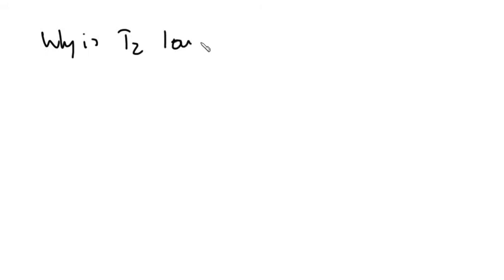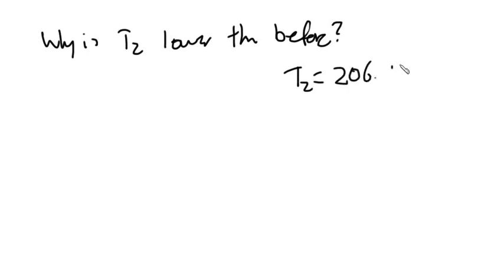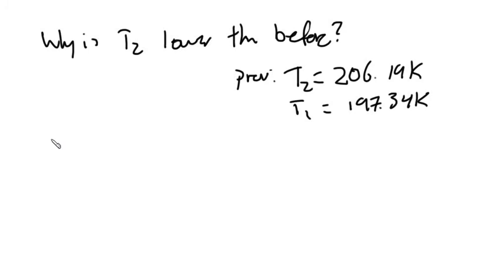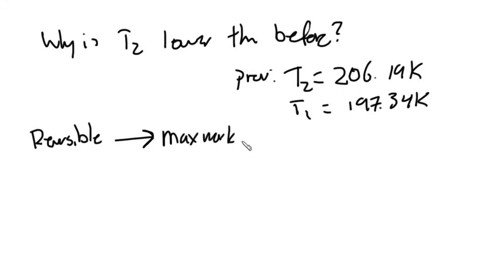The last part of the question asks why this final temperature of 197.34 K is lower than the temperature found in problem 2.28, which was 206.19 K. The reason is that this process is reversible. A reversible process extracts the maximum possible work from the system, and when the maximum work is obtained, the temperature must decrease more.